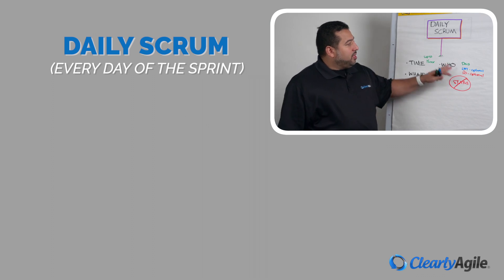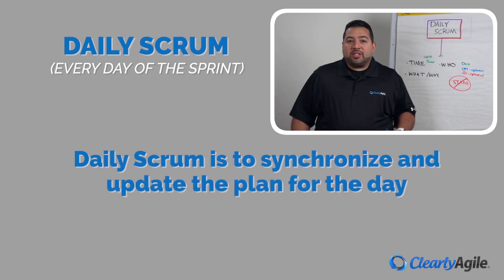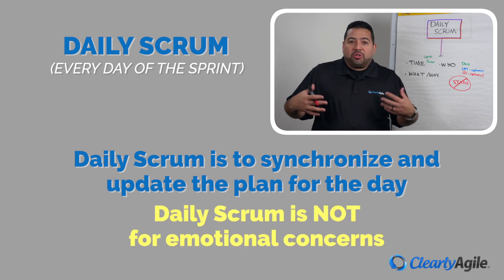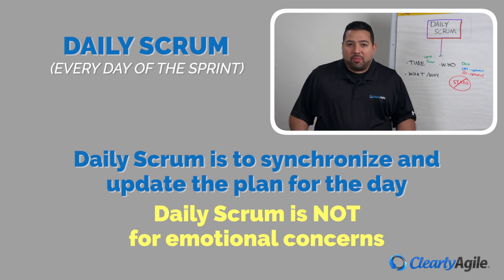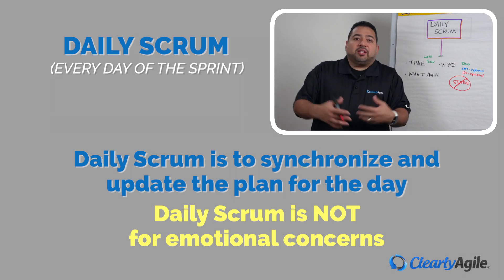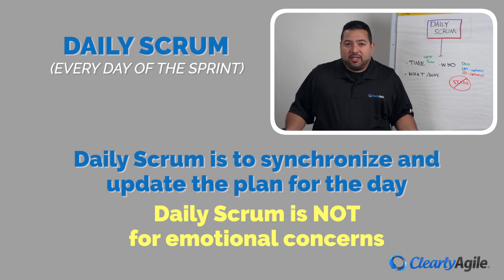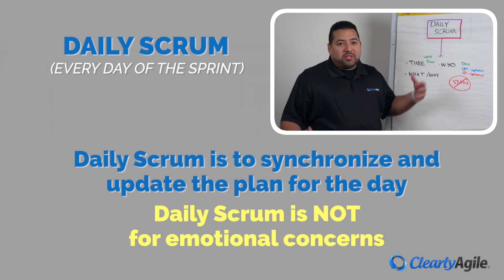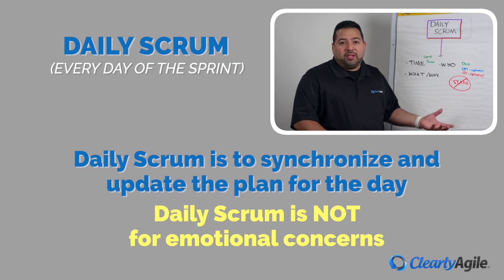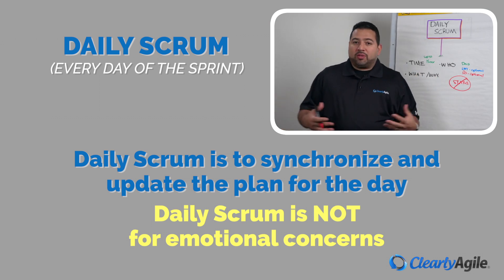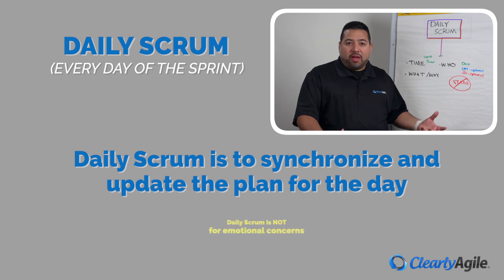One thing we need to keep in mind: the daily Scrum is simply to synchronize and update the plan for the day. It is not for emotional concerns or solving problems. For example, if Mark accidentally deleted a bunch of stuff in the database and Mary gets upset about that, the daily Scrum is not to talk about why Mark did what he did. The daily Scrum is simply for Mark to clarify: I did this, it was an accident, I'm going to need help getting it back. After the daily Scrum, Mary might work with Mark to figure out how to solve that problem.